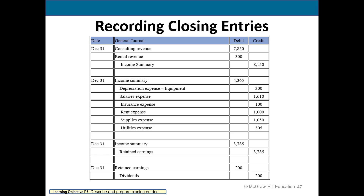The journal entries for closing: add the two revenue debits together and credit income summary. For the six expenses, add them together and debit income summary for the total. The income summary balance is $81.50 minus $33.65 equals $37.85 — debit income summary and credit retained earnings, which is also your net income figure. Finally, debit retained earnings and credit dividends.